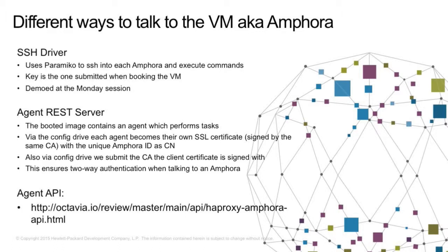On Monday there was a talk about the SSH driver, which uses Paramiko to SSH into each M4 and execute commands. The SSH key used is the one submitted when booting the VM. I think that's not as secure as it could be, so that's why we have the agent REST server with a REST driver. We have a disk image creator that bakes in the M4 agent. The spool image has this agent, it starts up automatically, and via the config drive the agent gets its own SSL certificate.